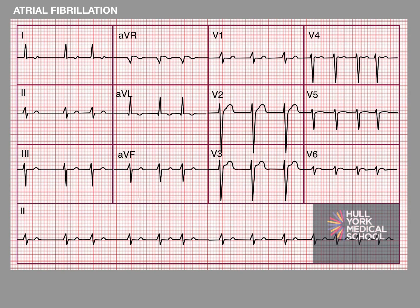Let's look at some ECG examples. We'd want to approach this in a nice structured way. Starting with: is there a P wave consistently before every QRS complex? Here there is not, so we can already begin to think that the electrical activity was not coming from the SA node. Carrying on with our analysis, we look at whether the rhythm is regular or irregular — here it's quite clearly irregular. And then we think about the rate. Because it's an irregular rhythm we can't use the 300 rule.